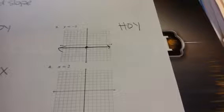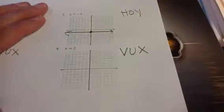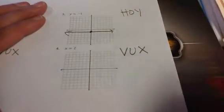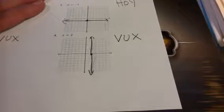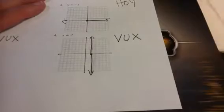Number four: X equals two. X equals two is a VUX — V-U-X — because it's just X and a number. On the X-axis, go to where two is and draw a vertical line. For graphing, decide if it's a HOY or a VUX, plot the point, and draw your line.